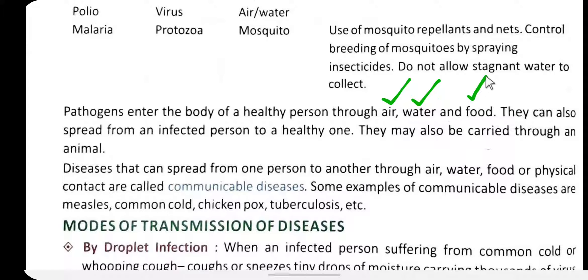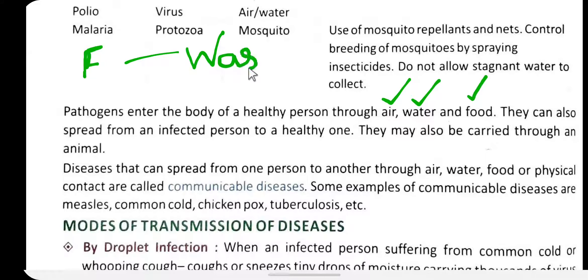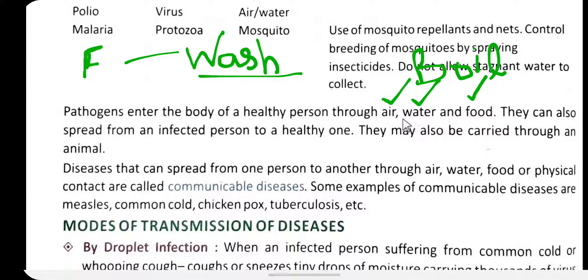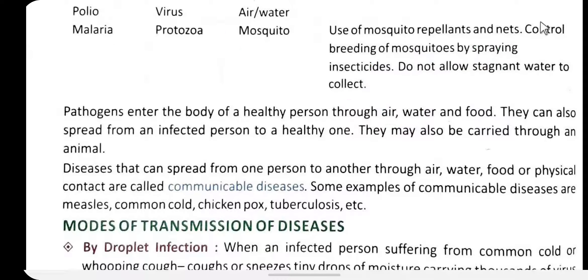Always wash fruits and vegetables thoroughly before eating. Boil water or use filtered water before drinking. Although we cannot fully control the air, we can plant more trees around us so that they help purify the air, keeping us safe from these diseases.